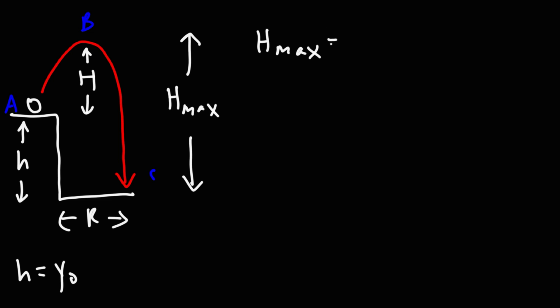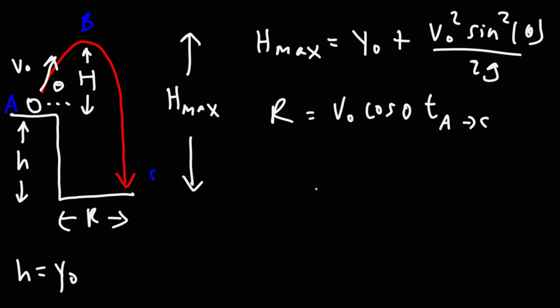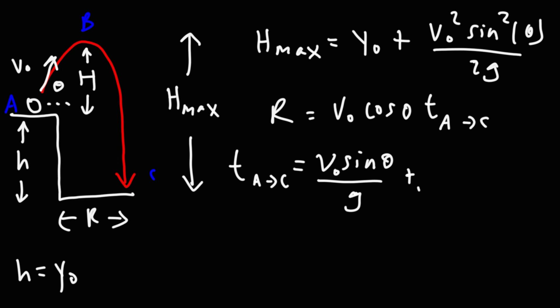The maximum height relative to the ground equals the height of the cliff plus v_initial²·sine²(θ) over 2g. To calculate the range, you need v_initial, the launch angle, and the time from A to C. One formula for this time is v_initial·sine(θ) over g plus the square root of 2·h_max over g. There's also another formula in the formula sheet to find this time using the initial speed, launch angle, and the height of the building y_initial directly.